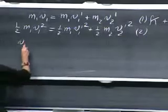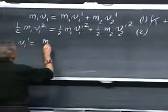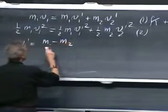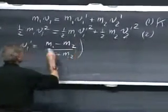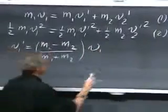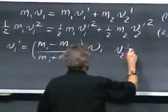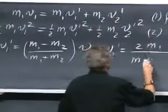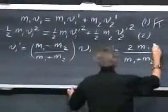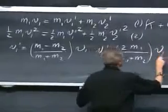V1 prime will be M1 minus M2, divided by M1 plus M2, times V1, and V2 prime will be 2M1 divided by M1 plus M2, times V1.